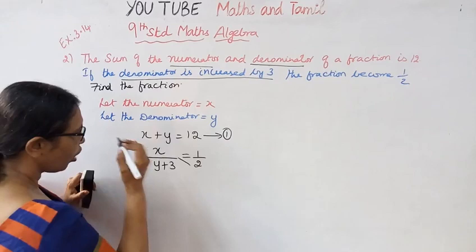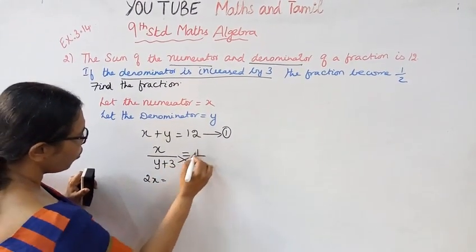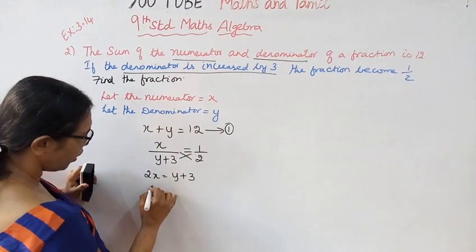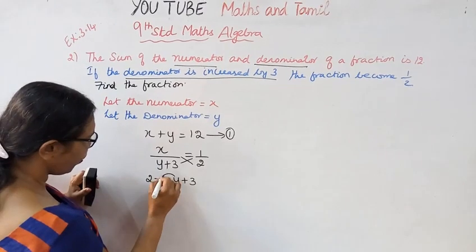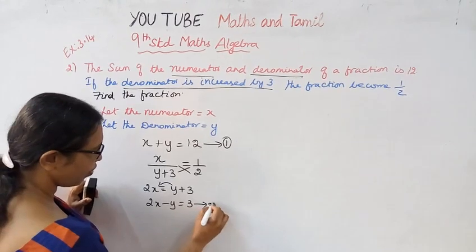Now cross multiply - 2 into x gives 2x equals 1 into y plus 3, that is y plus 3. So 2x minus y equals 3. This is the second equation.